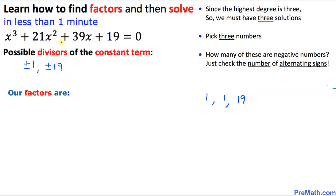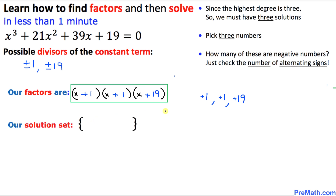So the factors of this given cubic equation are three parentheses, each with x, giving us (x + 1)(x + 1)(x + 19). The solution set takes those numbers and changes the sign: positive 1 becomes negative 1, so the solutions are x = negative 1, negative 1, and negative 19.